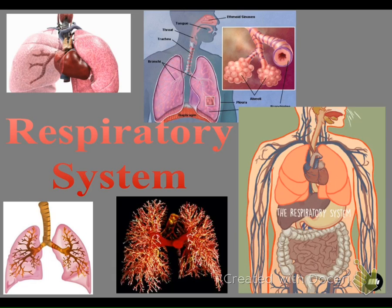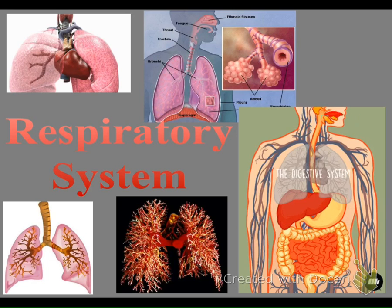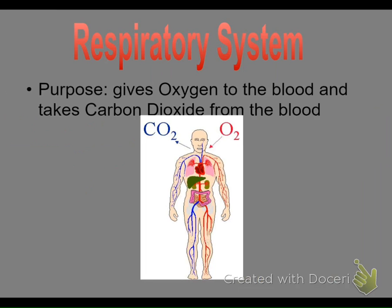You can see some of these pictures. As we go through this, you may want to jump back and look at some of these pictures later to get a better understanding. The main purpose of the respiratory system is it gives oxygen to the blood and it takes CO2 from the blood. We talked about this a little bit with the circulatory system — oxygen has to get to the cells and CO2 has to get out of the cells.